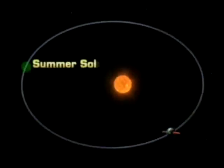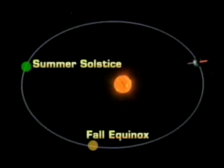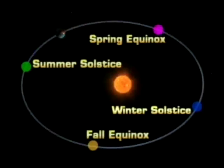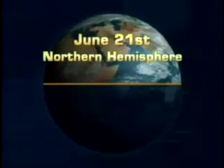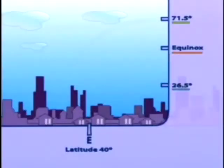Almost all ancient people that relied on planting times discovered this relationship. The start of the four seasons — summer, fall, winter, and spring — are noted by what astronomers call the summer solstice, the fall equinox, the winter solstice, and the spring equinox. At the start of summer, around June 21st in the northern hemisphere, the sun is at its highest point above the horizon at noon.